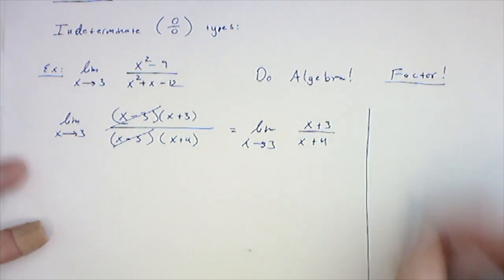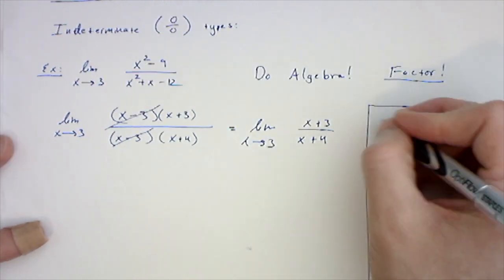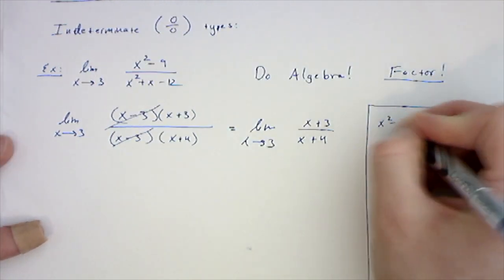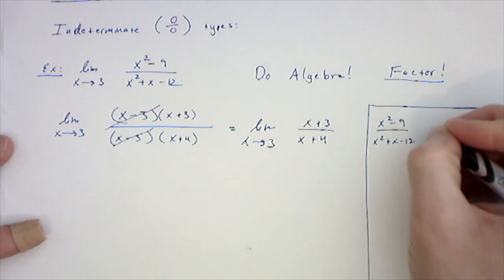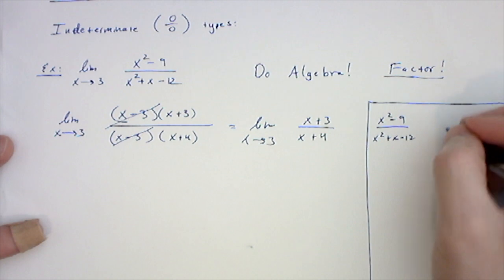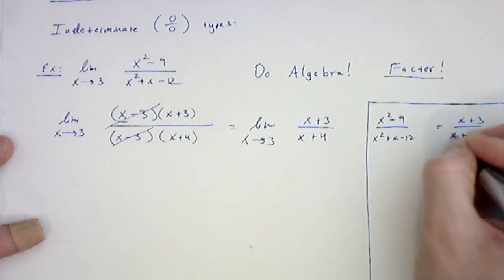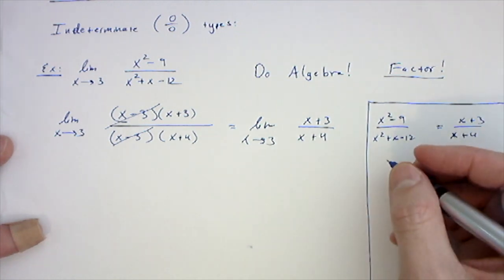What I'm saying, just to clarify that even more, is these two functions—x squared minus 9 over x squared plus x minus 12, and x plus 3 over x plus 4—these are the same everywhere except at positive 3.